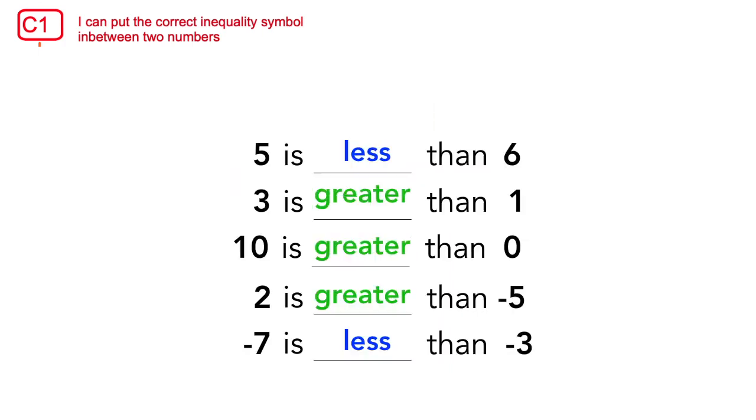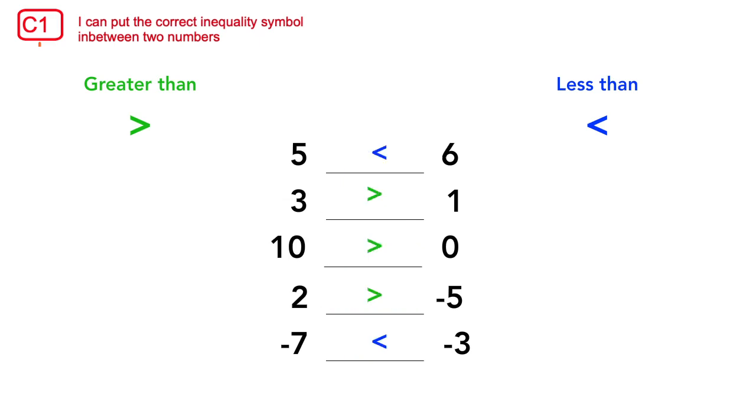We can represent this information in maths using specific symbols. The symbol for greater than is this, and the symbol for less than is this symbol. So the questions from before can be shown instead like this. How can we remember which symbol means what?